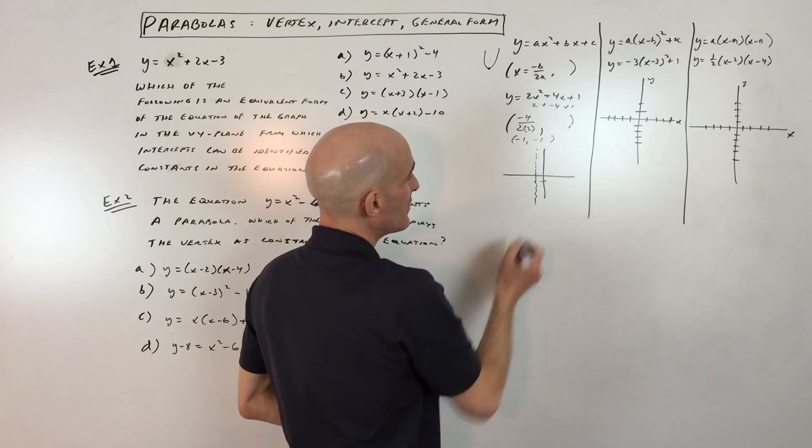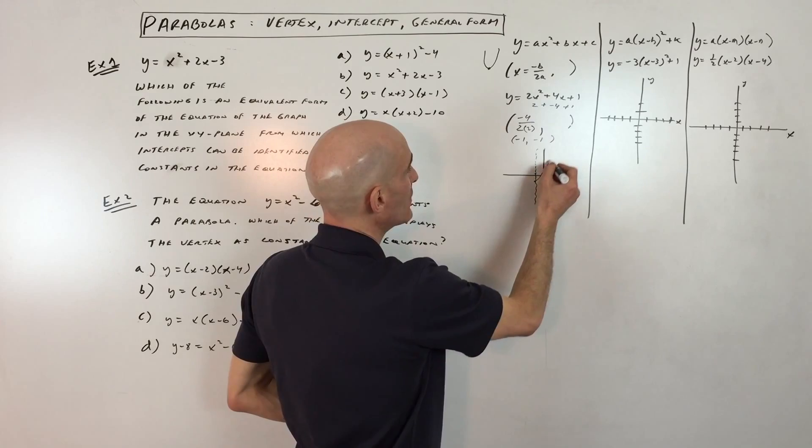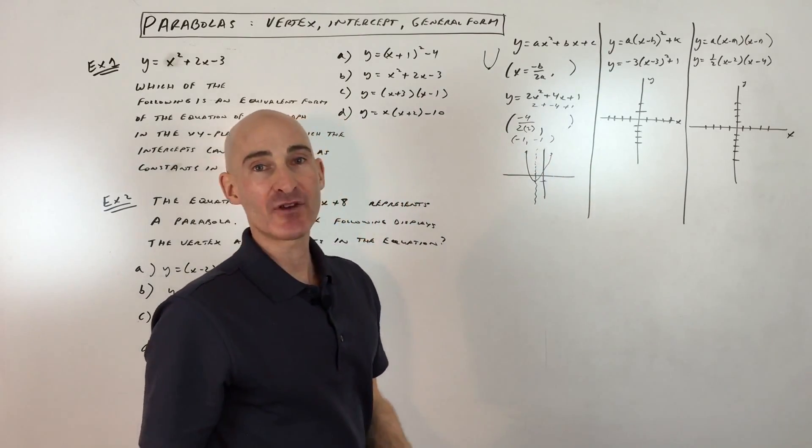The axis of symmetry goes right through that x-coordinate of the vertex, the a value is positive, which tells us that it's opening up like this, and so that's a quick sketch of the graph right there.